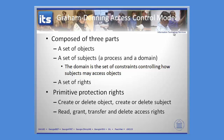The idea is to control those rights — to see what folks can do. They've got some primitive protection rights with create or delete objects or subjects, and then different access rights with read, grant, transfer, and delete. And that's all we're going to talk about with the Graham-Denning access control model.